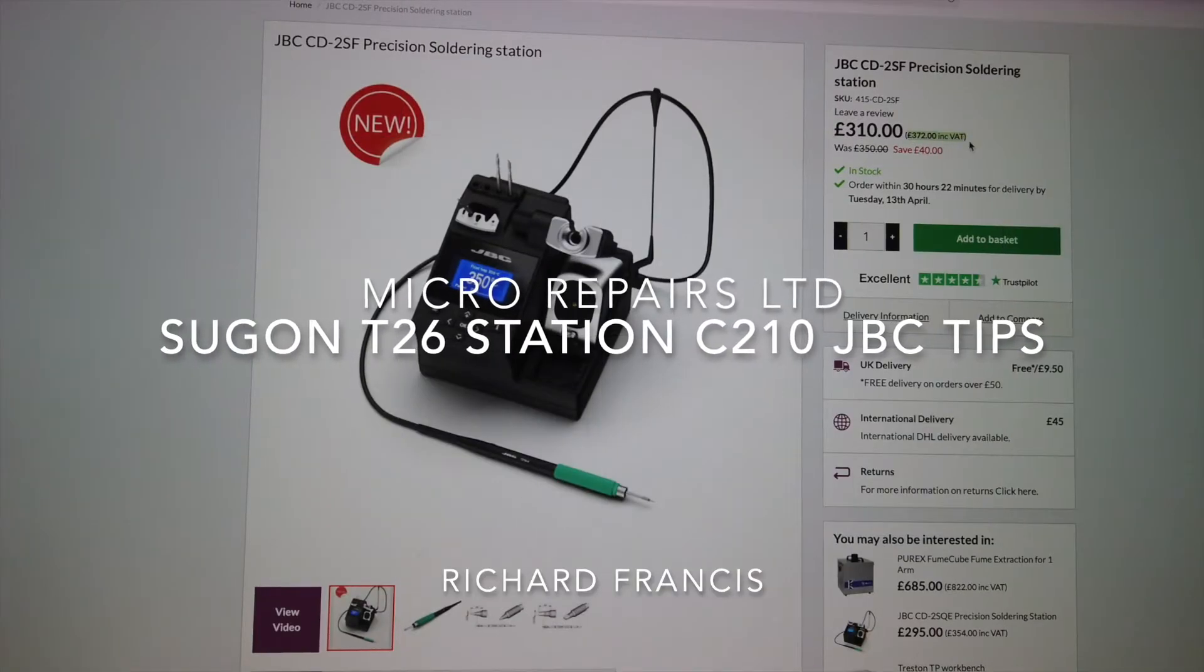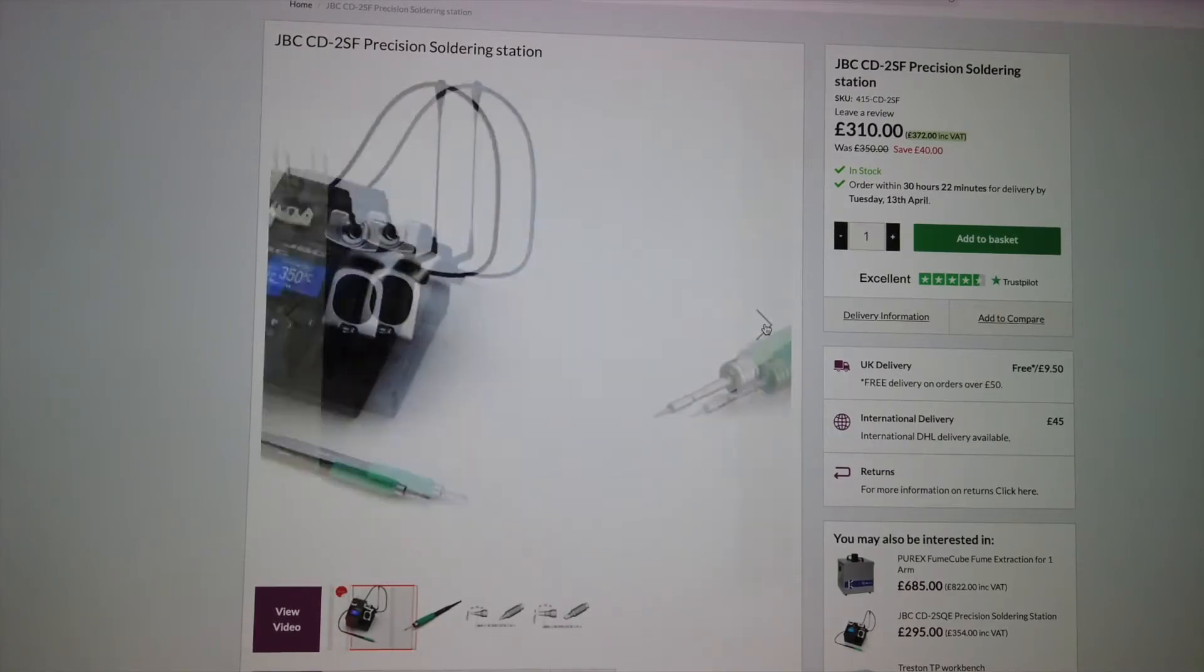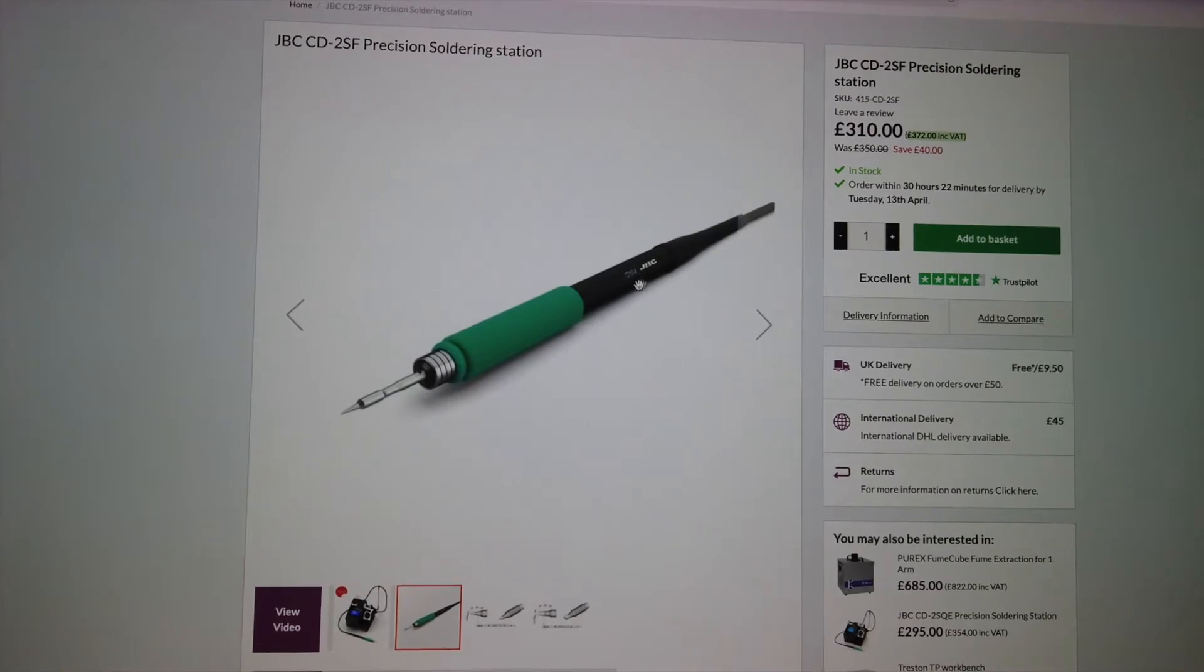Hello everyone, this is the JBC precision soldering station. It's one of their lower end models but it's still quite an expensive station. It still comes in just under 400 quid, including VAT.